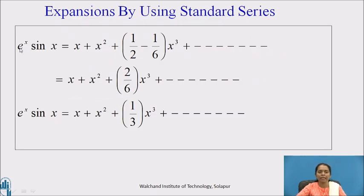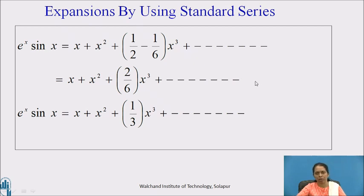Therefore, e^x · sin(x) = x + x² + (1/2 - 1/6)x³ + ..., which equals x + x² + (2/6)x³ + .... Finally, the simplified form is e^x · sin(x) = x + x² + (1/3)x³ + ..., which is the required answer.